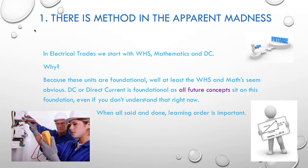There is some method in the apparent madness. In electrical trades we start with WHS, mathematics, and DC or direct current. Why do we bother? It's because these units are foundational. The WHS and mathematics seem obvious, but DC or direct current is foundational as a future concept, and those other future concepts sit on this foundation — even if you don't understand that right now.